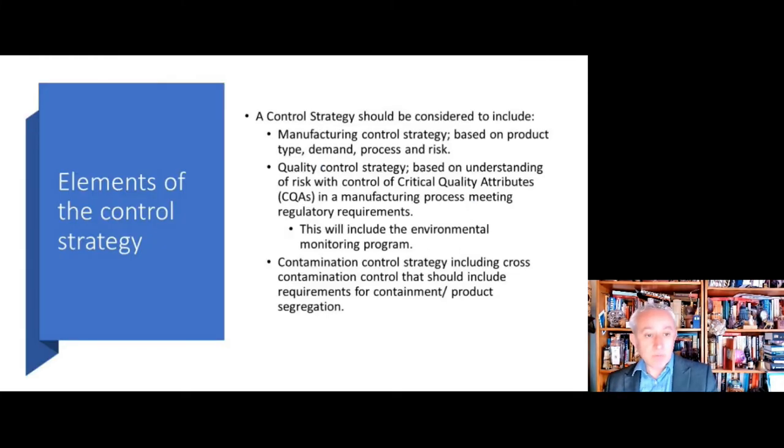In terms of some of the other elements, and I keep going back to this theme of everything being connected together, you need to also feed in the contamination control strategy to a manufacturing control strategy, so there may be nuances based on product type, demand, process, and risk. A quality control strategy, so we have some understanding of critical quality attributes. Environmental monitoring should be connecting with that. And also cross-contamination if we're using very different products with different active ingredients in the same facility, then the containment product segregation aspects will also be of importance.